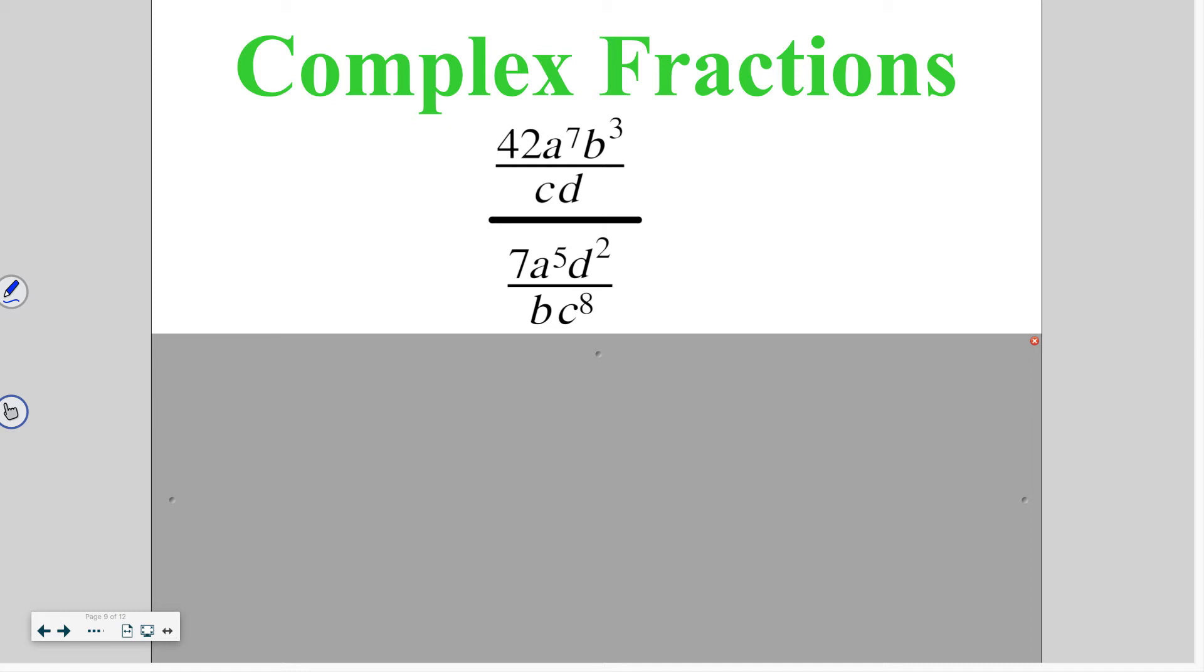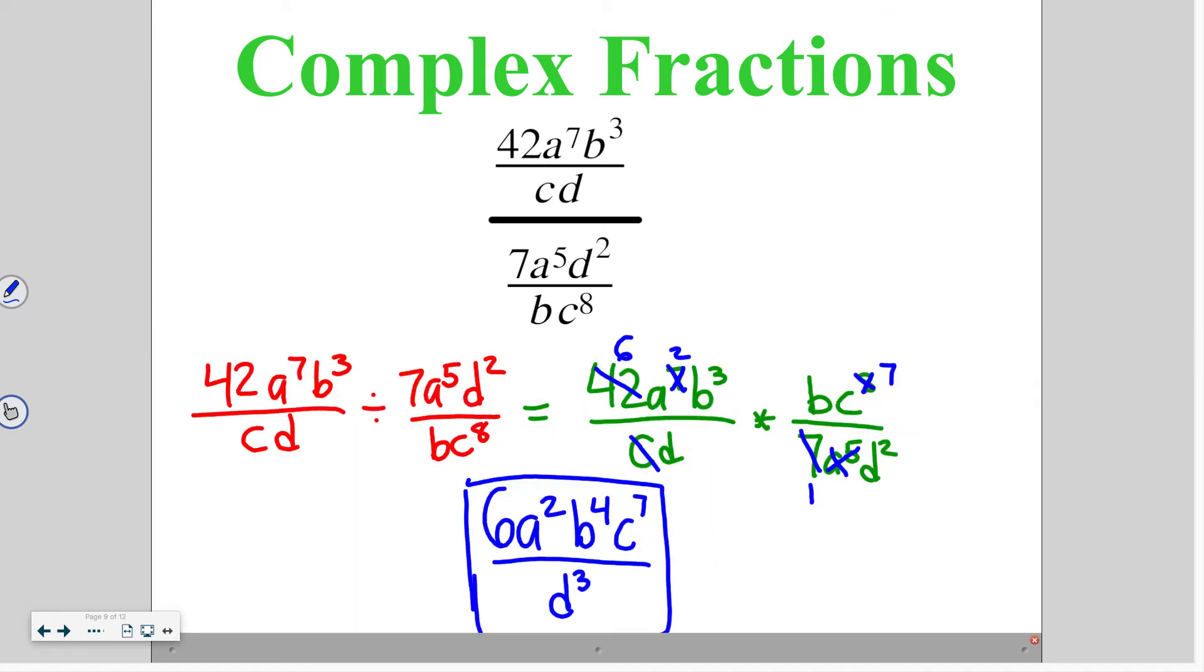Go ahead and try this one on your own. Set it up as a division problem, keep, change, flip, and cancel out. We end up with 6 a to the second, b to the fourth, c to the seventh, over d to the third power.